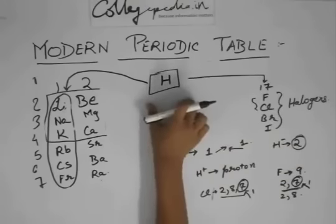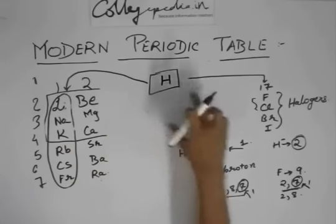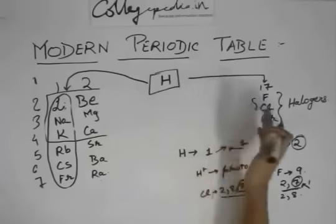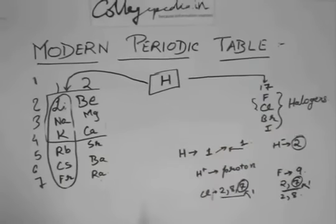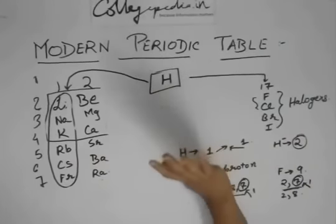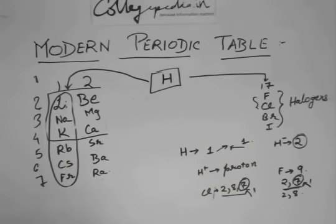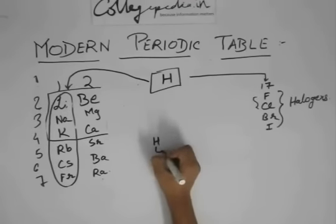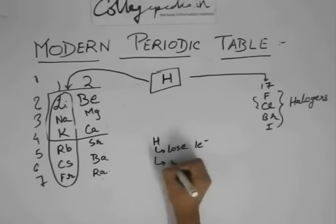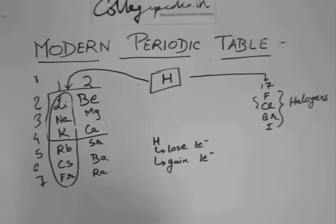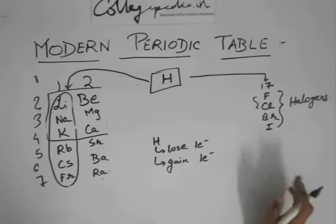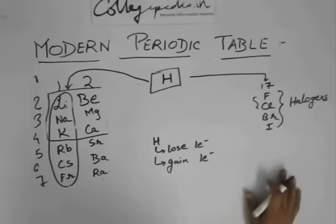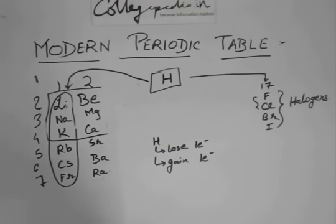Hydrogen can be compared to Group 1, and hydrogen can also be compared to Group 17. That is why there is a fight between Group 1 and Group 17 over hydrogen. So hydrogen has been placed separately — it goes with neither Group 1 nor Group 17. In summary, the answer to why hydrogen is placed separately is that it can lose one electron and it can gain one electron — it can do anything.